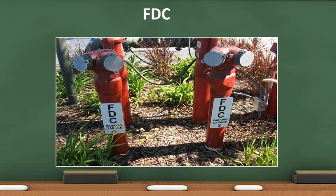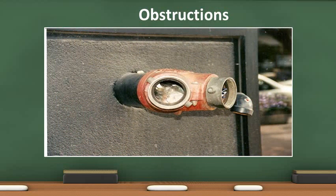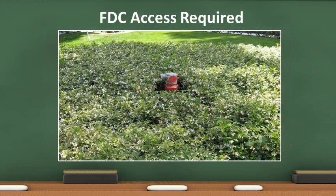Fire department connections allow the fire department to infuse additional water into the sprinkler system, which boosts the pressure to the fused sprinkler heads. FDCs are required to be labeled indicating which buildings they serve. FDC caps must always be in place and no debris inside the inlet. Gaskets are required to be in place and in good condition. Couplings must swivel freely. In this photo, there is no gasket and no cap. If caps are not in place, the interior of the connection shall be inspected for obstructions. When debris is present, the inlets will need to be back flushed. Codes require a fire department connection shall be back flushed every five years.